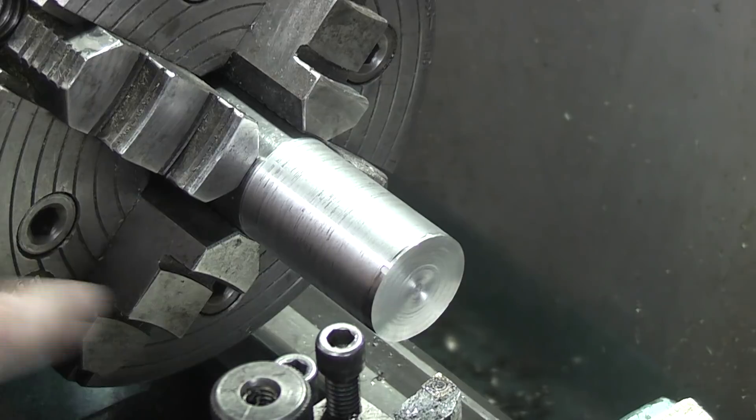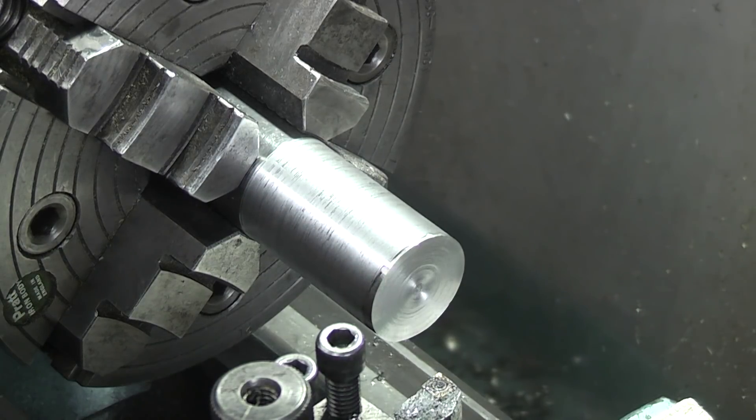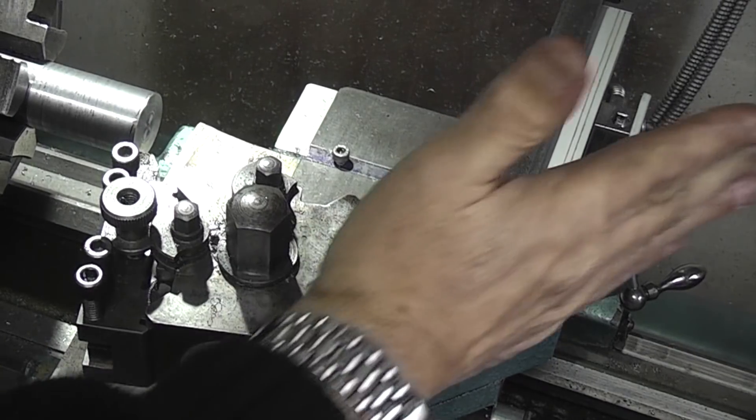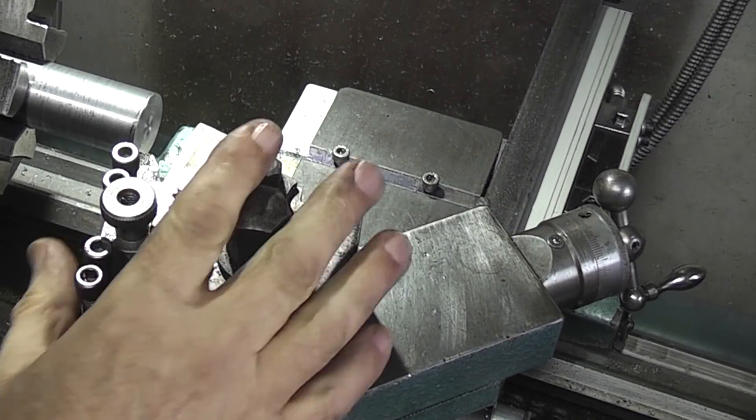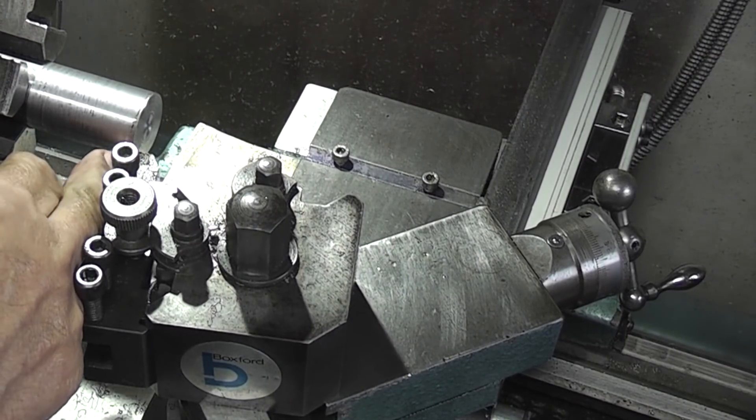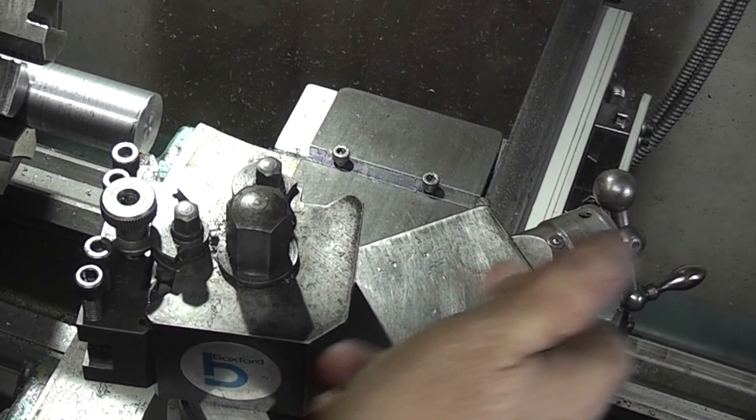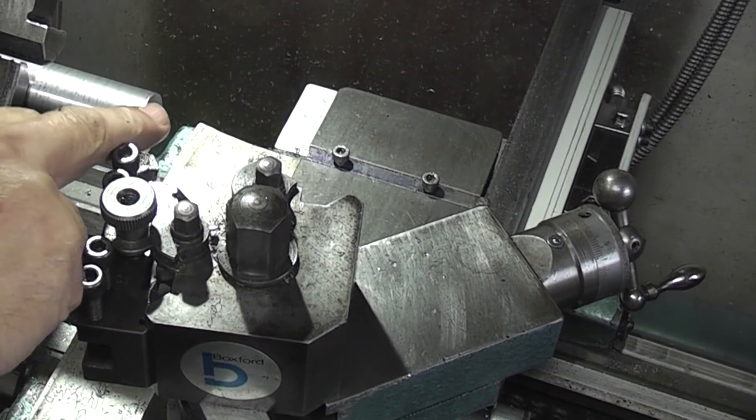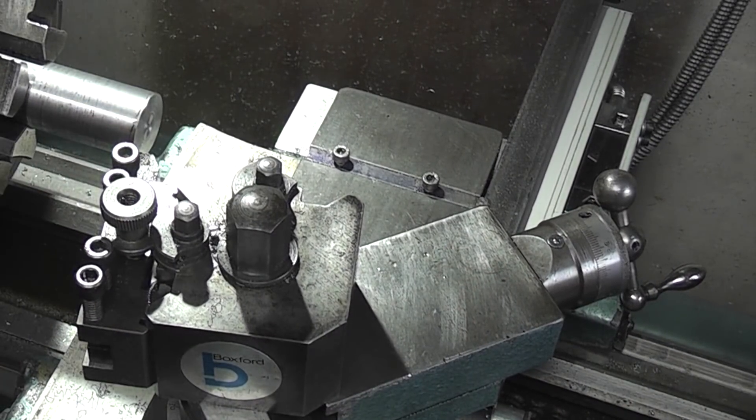That'll do, now put an angle on this end and to do that I'm just going to adjust my compound slide, changed my compound slide around 45 degrees, altered the tool so it's presented to the workpiece correctly and now by using the compound slide I'll machine a 45 degree angle on the end.